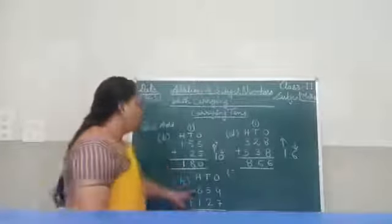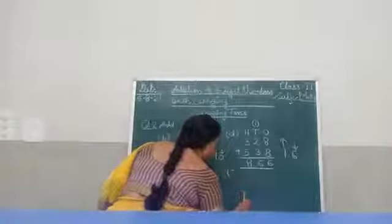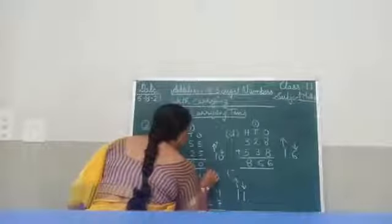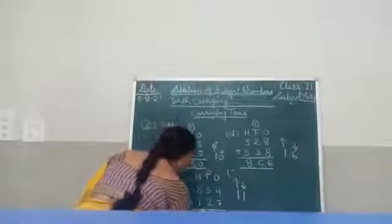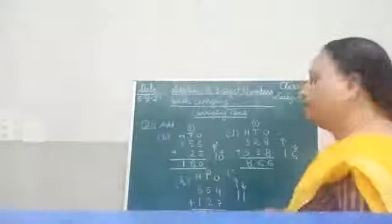Now the numbers are 854 plus 127. We do 4 plus 7. Counting forward gives 11. So the ones digit number will be placed at ones place and the tens digit will carry forward to the tens place. Then 5 plus 2 plus 1 of carry gives 8. And 8 plus 1 is 9. So 854 plus 127 is equal to 981.